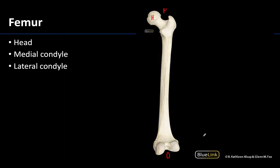On its distal end there are two condyles — a medial and a lateral. To identify which is which, look at which condyle is on the same side as the head. The head of the femur must be medially placed in order to articulate with the acetabulum, therefore this is the medial condyle and the other is the lateral condyle. We are looking at a posterior view of the femur because this affords the clearest picture of the condyles, showing how bulbous they are.